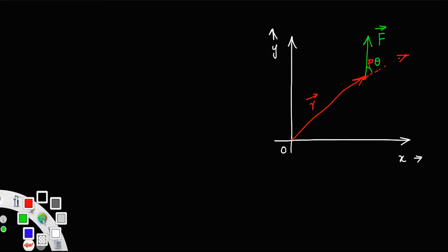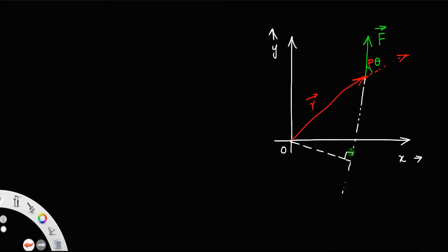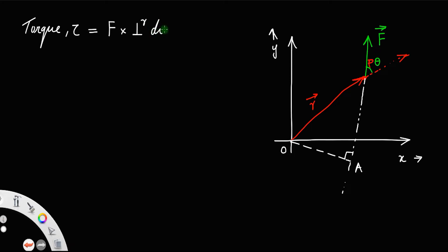Now, if you extend the line of action of the force and drop a perpendicular from the origin to the line of action of the force — that will be like this, this one is 90 degrees — let us call that point as A. We define torque as force into perpendicular distance. So, torque equals force F into perpendicular distance OA. That is our torque.